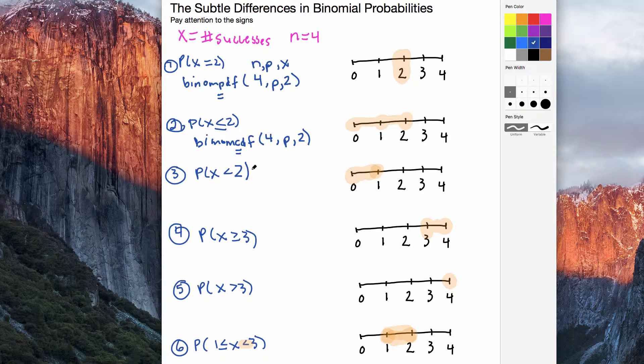My third example here, probability of x less than 2. So I had highlighted the 1 and the 0. On a calculator, I would say binomial CDF. So we have 4 successes. p would be our probability, whatever that number is.